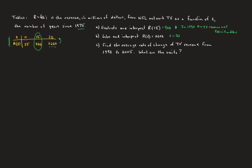Back to part B: T equals 30. The interpretation is that 30 years from 1975, which is the year 2005, the TV revenue reached 2600 million dollars. We use the units that were given to us.